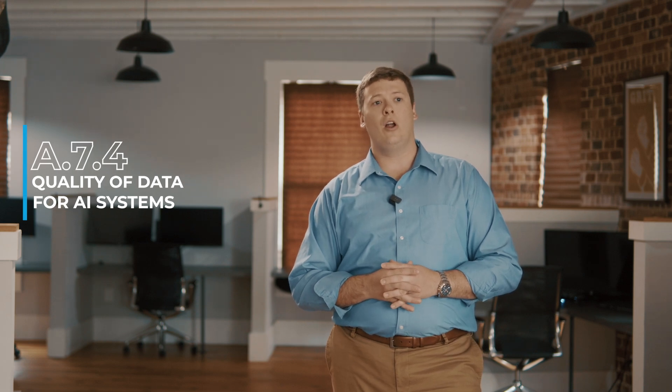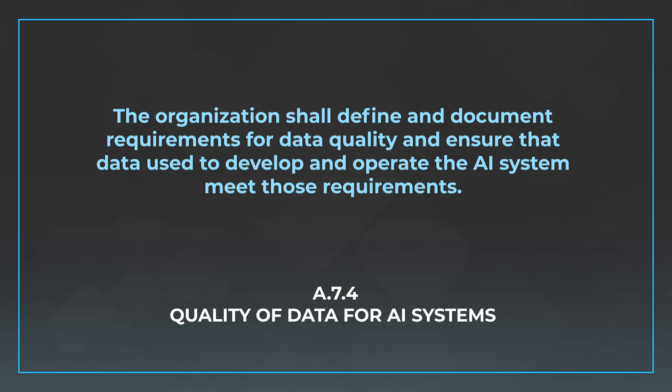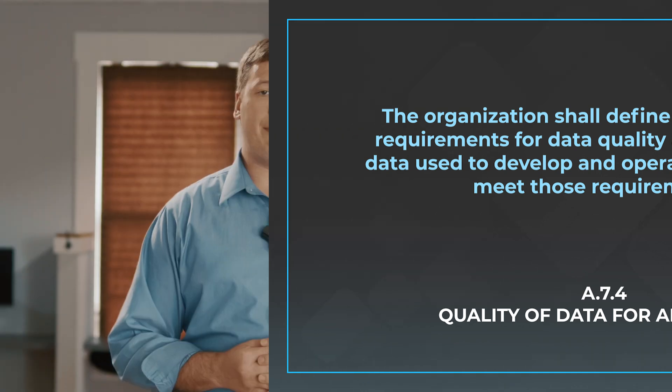The next control is A.7.4, Quality of Data for AI Systems. The quality of data is very important because it will not only affect the performance of your AI systems and ultimately the value you're aiming to bring to the stakeholder, but it could also affect the data subjects in ways that are unexpected. This control says the organization shall define and document requirements for data quality and ensure that the data used to develop and operate the AI system meet those requirements. I'd encourage you to read the implementation guidance on this control.